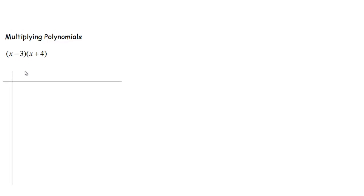I use algebra tiles to show this because that's the picture I need to have in my head. I'm going to transfer that knowledge into a chart so it makes more sense and I know I haven't missed any pieces. The first thing I do is write my two terms across the top and down the side — the two terms I'm multiplying. We can only multiply two terms at a time.